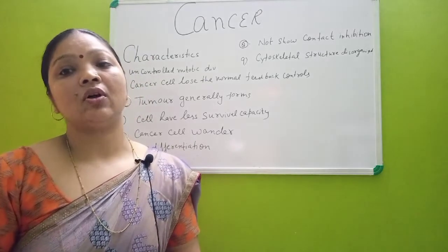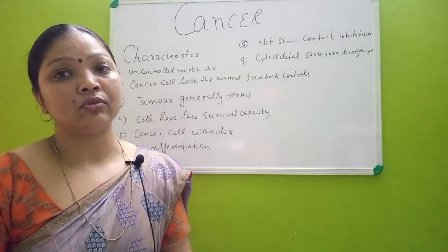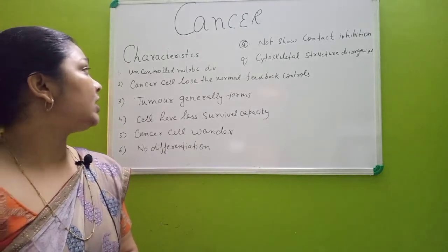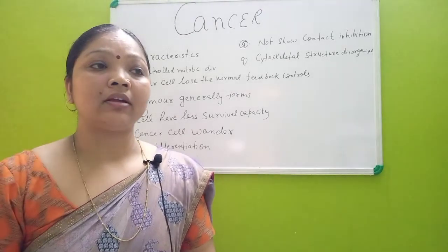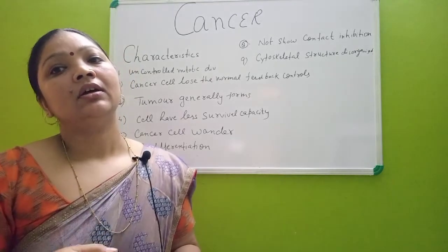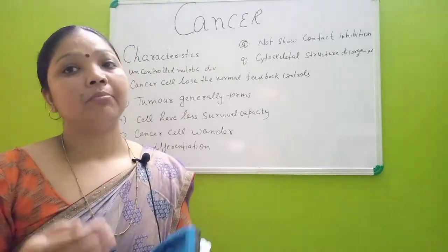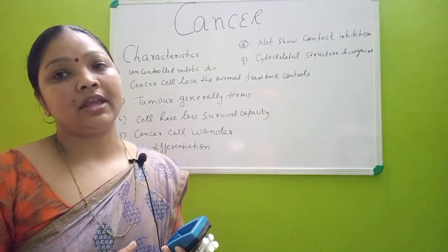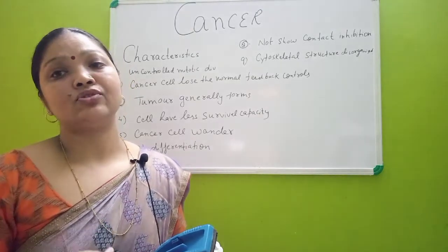Because the cell is not properly differentiated, it is unable to perform any specific function — that is why it is called uncontrolled and undifferentiated cell growth. The second characteristic is that cancerous cells lose their normal feedback control. Normally, when cells grow to a certain extent, a signal is sent to stop further growth after maturity. In cancer, this feedback becomes inhibited, the signal does not reach properly, growth becomes uncontrolled, and the cell size becomes massive.